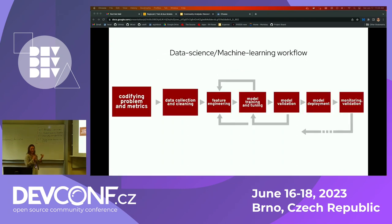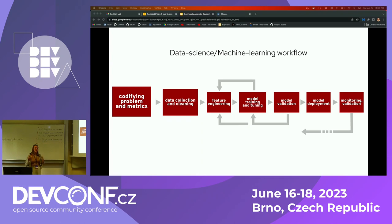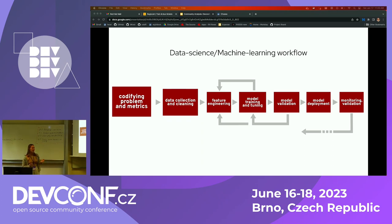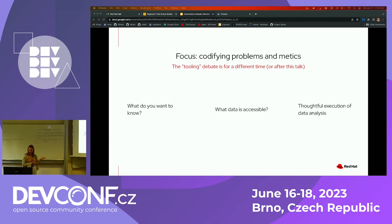When talking about general data science and machine learning work, some version of this graph is what you're going to see. For this presentation, we're going to be mainly focusing on the first step — codifying problems and metrics — and a little bit into the collection and cleaning. This step is also the one that's usually overlooked. It's not the fun or exciting one. Everyone wants to go to training models and doing the fancy stuff, but this is usually where the true value of your analysis comes from. You don't just wake up one day and know exactly what you want to measure.